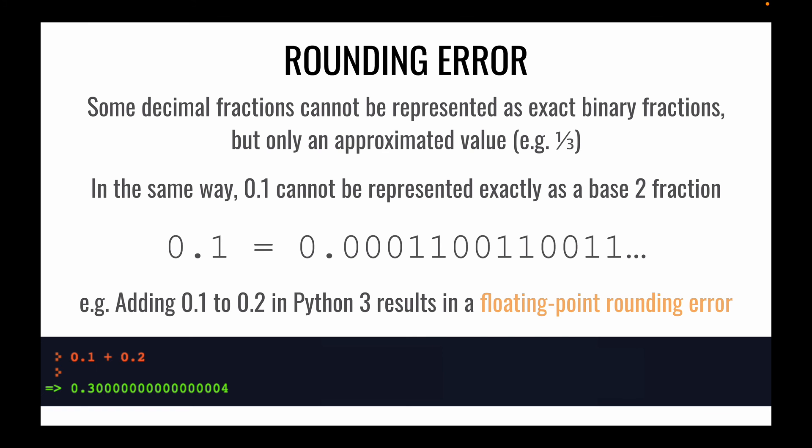There is a phenomena in floating point where we end up with a rounding error. So when we try to add 0.1 to 0.2 in Python 3 for example we end up with a very strange situation. That's because as you may have noticed when we did 1 over 2, 1 over 4, 1 over 8 you're going to end up with some values that cannot be represented. So what do we do in this case?